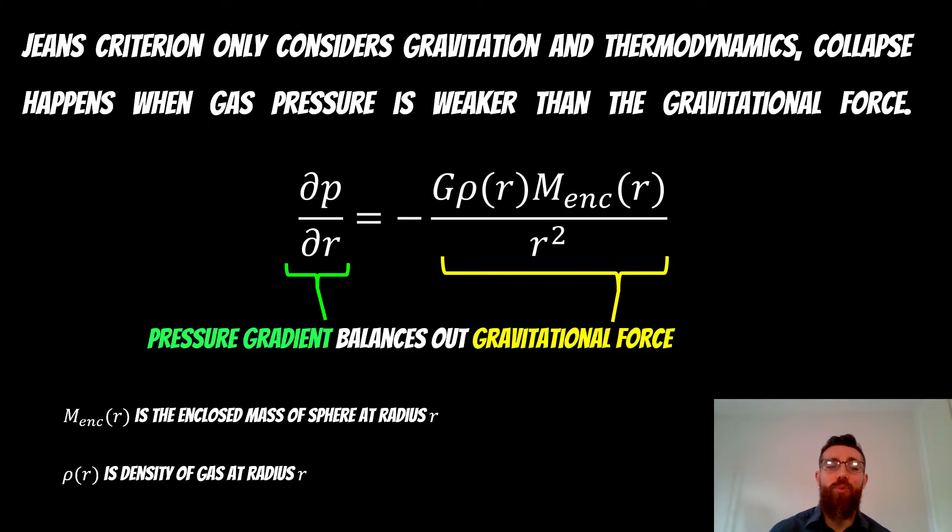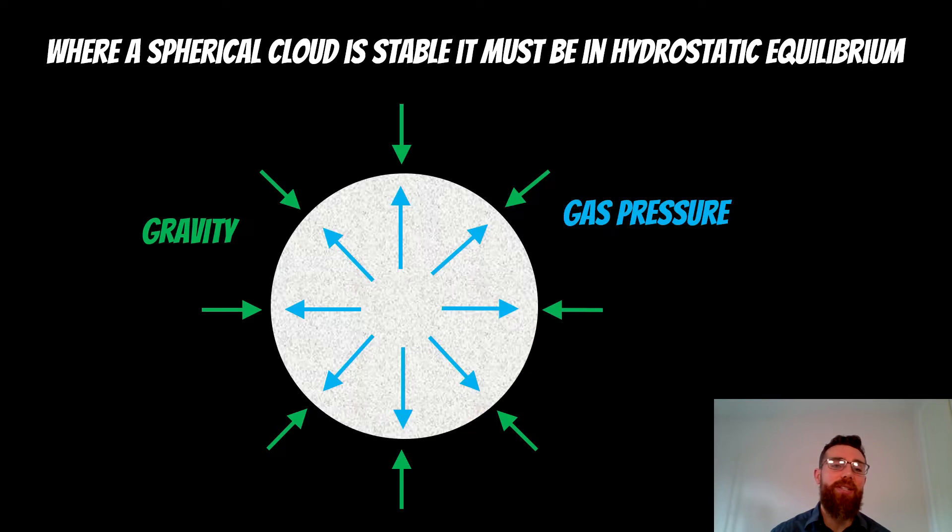On the left hand side, you've got the pressure gradient, the pressure at some radius of the cloud. On the right hand side, you have the gravitational force at some radius. Your mass is the mass enclosed at that radius, and then you have your density of the cloud at that radius. This is the starting point, and it's the only thing that it actually considers.